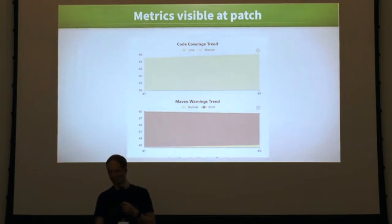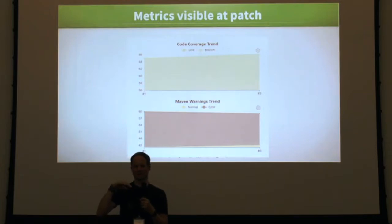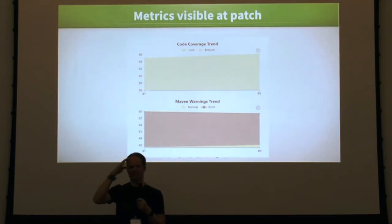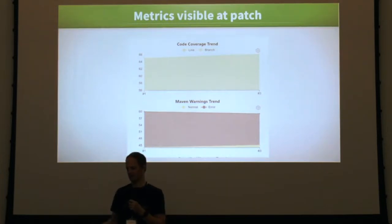For example, here's some code coverage for the ODF toolkit in Java. It's kind of nice: when your patch goes in, the metric shows uncovered lines going down and covered lines going up. It's rewarding.